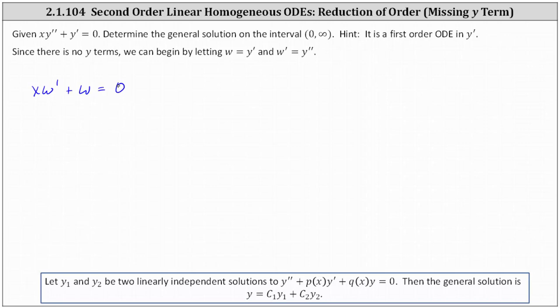Once we solve for w, we can come back and find y by integrating w because w equals y prime. Let's first write w prime as dw dx, which gives us x times dw dx. Let's also subtract w on both sides,